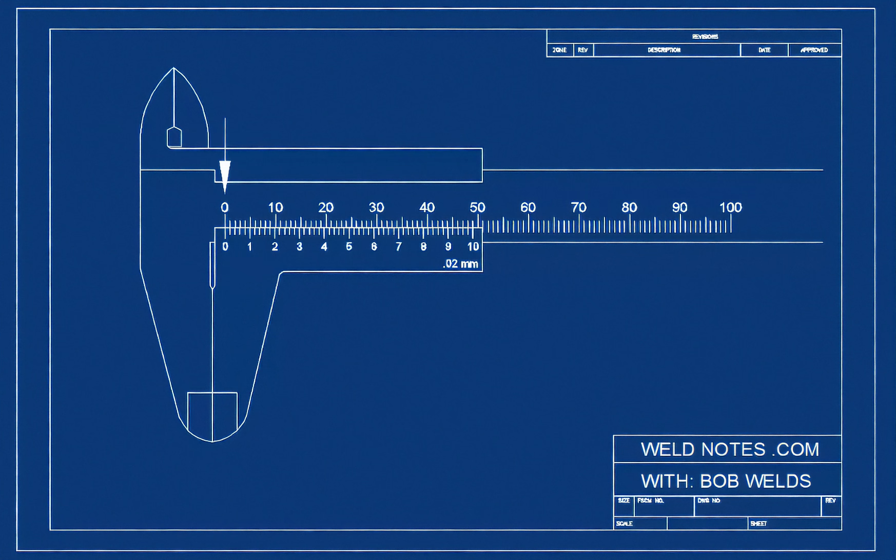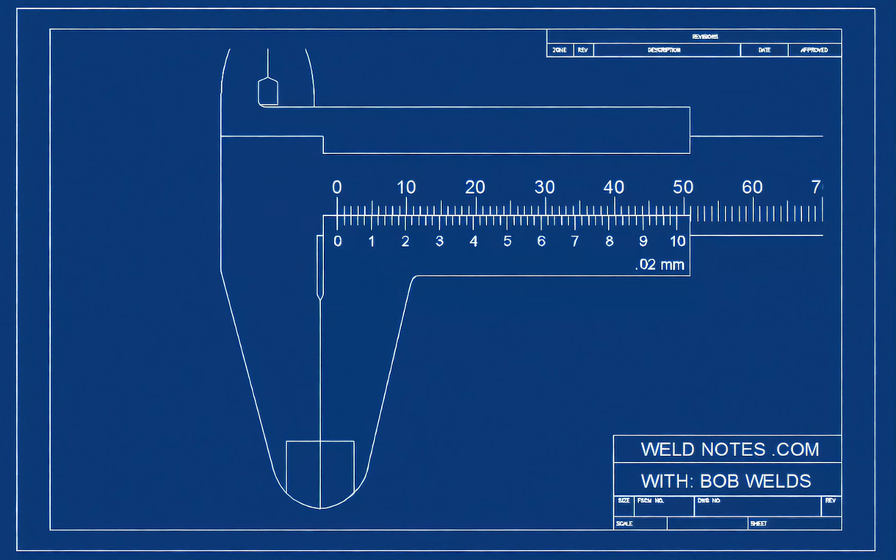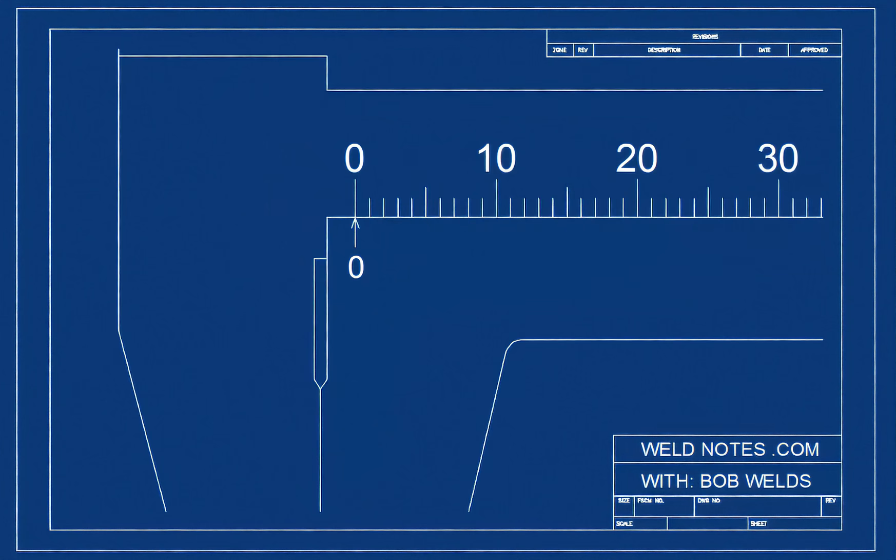Now with the calipers closed, you can see where you're supposed to read the main scale. There are two scales on a vernier caliper, the main scale and the vernier scale. I'm going to erase the vernier scale and let you just look at the main scale first. You see, the zero mark points to the place where you're supposed to read the main scale. Right now it points to zero.